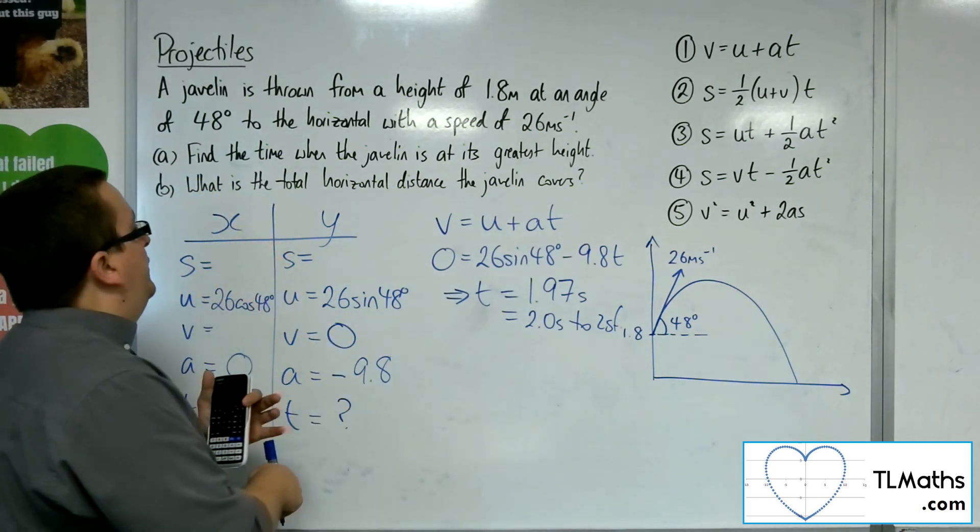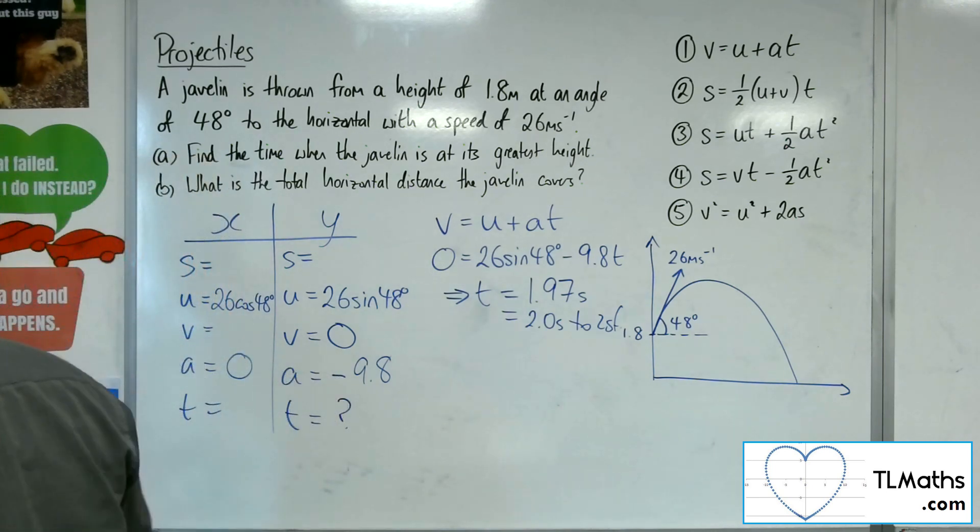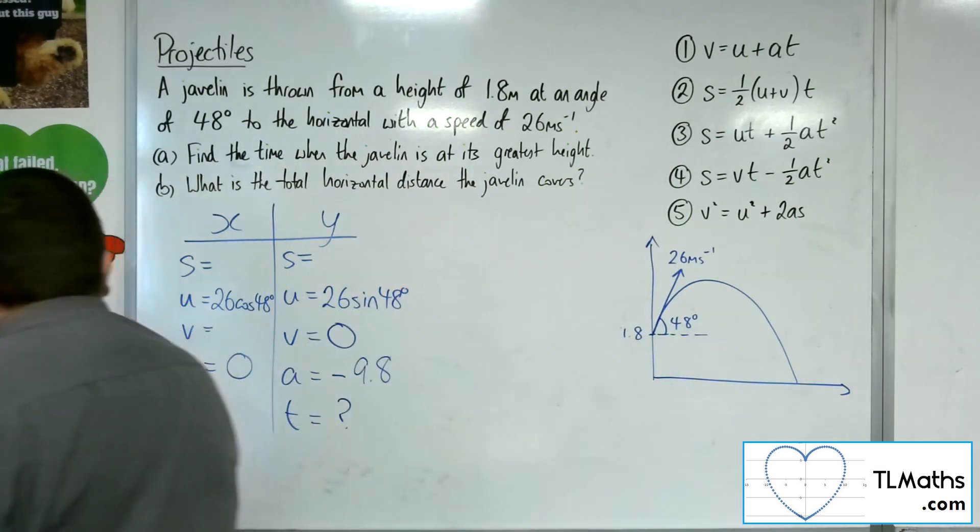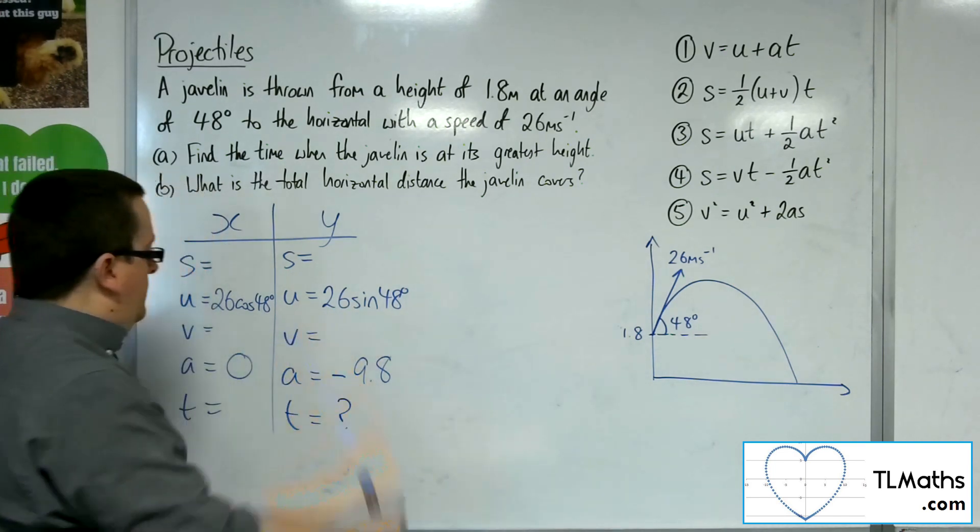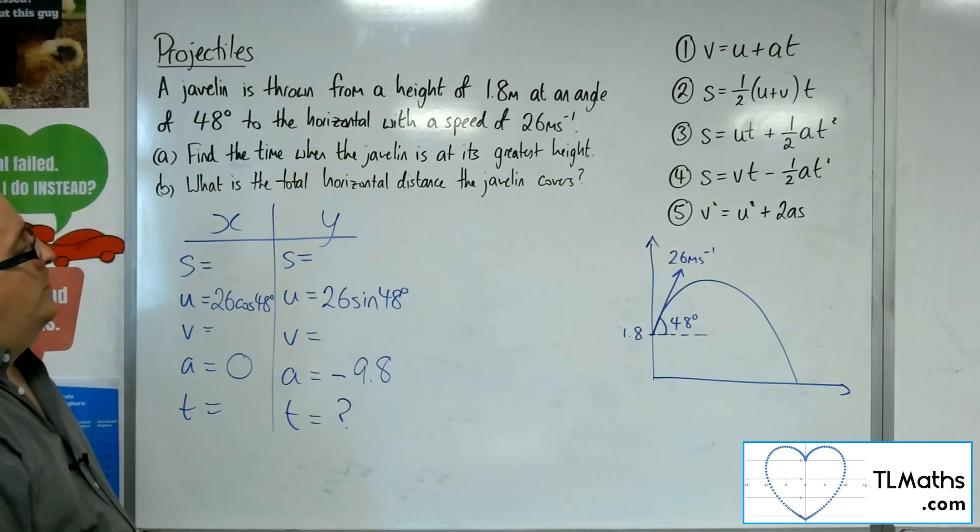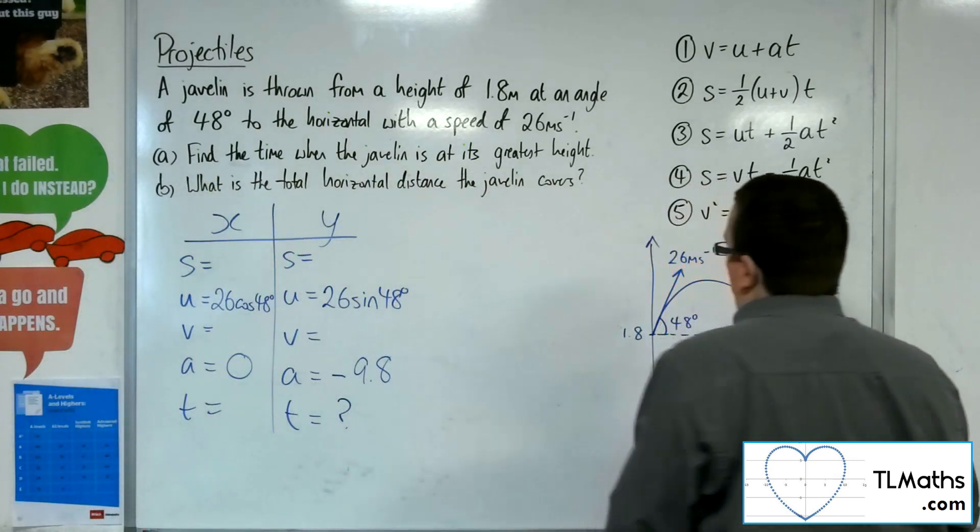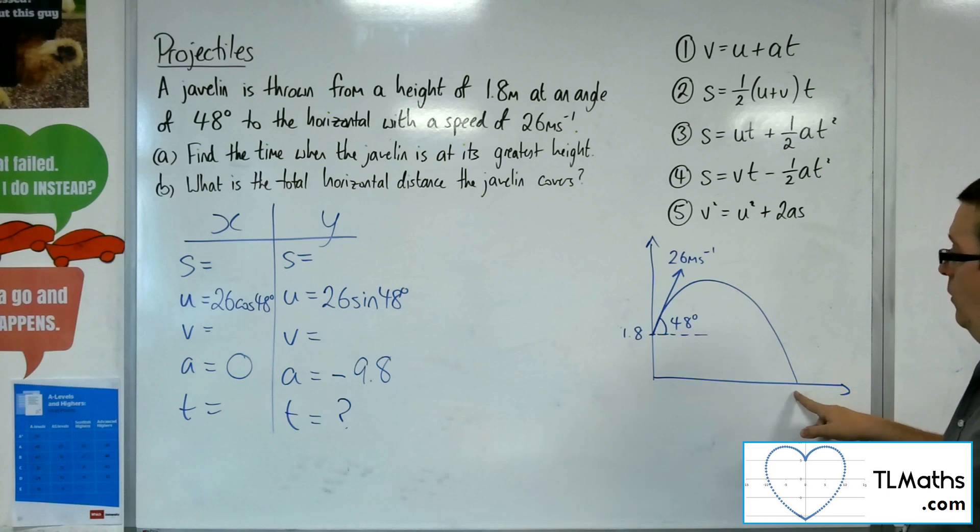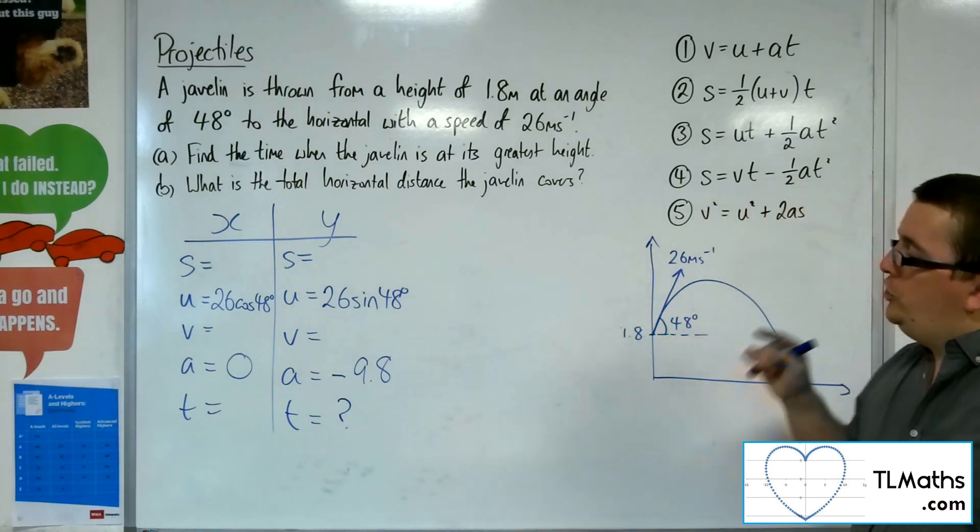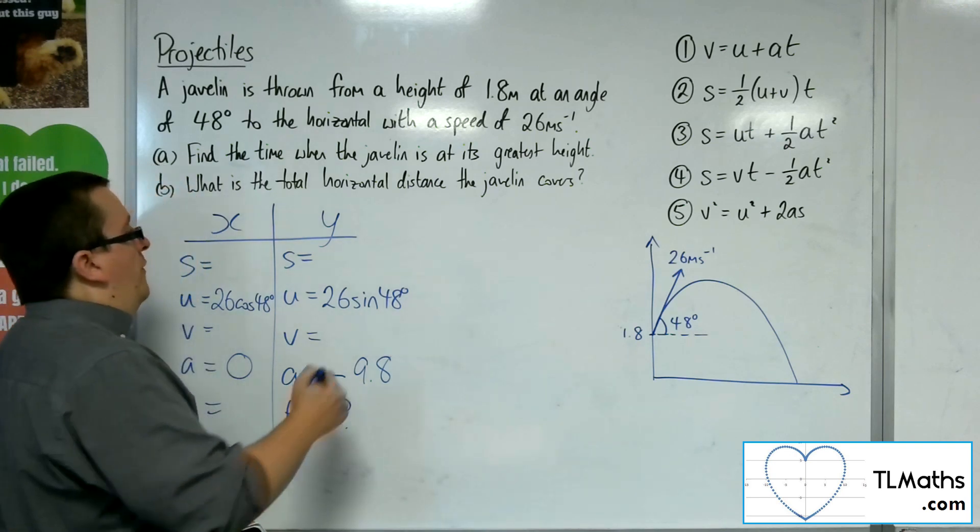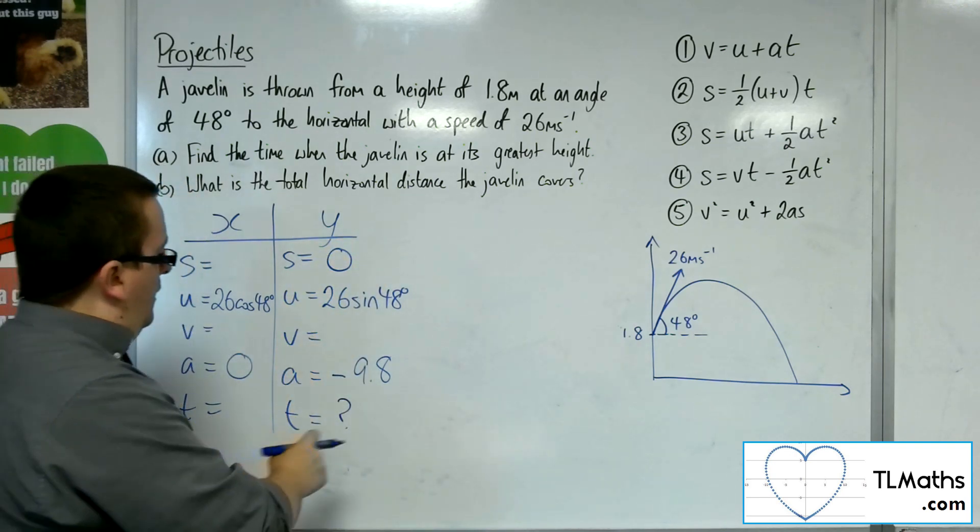So that's our answer to part A. Now part B is asking, what is the total horizontal distance the javelin covers? Now, if I just rub that out because we don't want the velocity to be zero anymore. So what am I going to need to find for that? Well, I probably want to find the time when I am at that point, and that should allow me to find the horizontal displacement. So really I want to find the time at which the vertical displacement is zero. So, I want the vertical displacement to actually be zero, and I want to find the time.